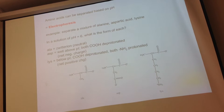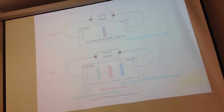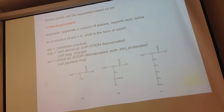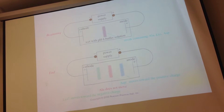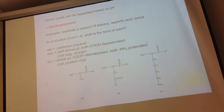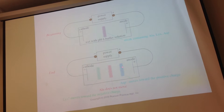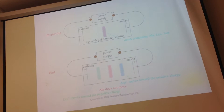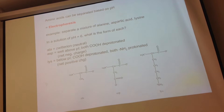You load a plate wet with pH 6 buffer — the pink stripe in the middle is your mixture of amino acids in the forms we just discussed. You apply a power supply with a cathode on one side and an anode on the other. Alanine was neutral, so it has no charge and doesn't go anywhere — it sits in the middle. Aspartic acid had an overall negative charge, so it moves toward the positive electrode. Lysine had a net positive charge, so it moves toward the negative side of the gel.